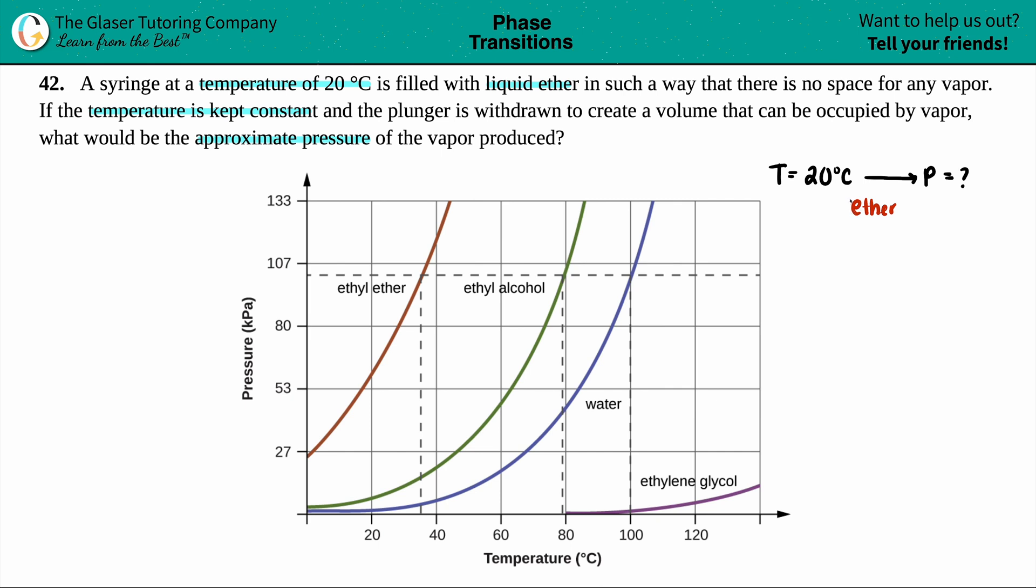So what I did was I pulled up a chart that we can use. There are four different liquids on this chart. Now since they only told us we're dealing with ether here, we're only dealing with the first slope. Here is the ether graph. So we don't care about the ethyl alcohol, the water, or the ethylene glycol.